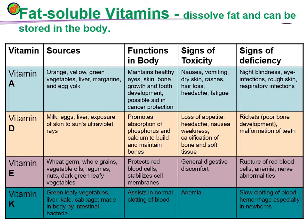Vitamin D can be obtained from milk, eggs, and other foods. Its function is to promote the absorption of phosphorus and calcium to build and maintain bones. Toxicity symptoms include loss of appetite and headache. Deficiency causes rickets, where bones start to deteriorate, and malformation of teeth.